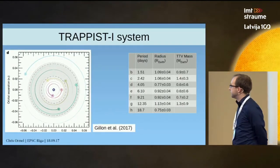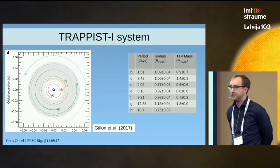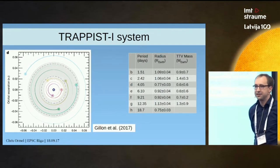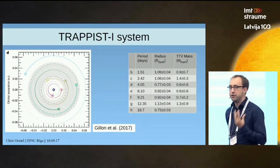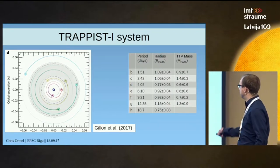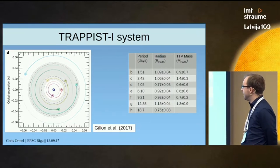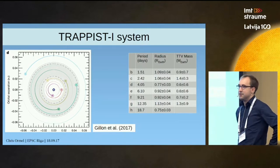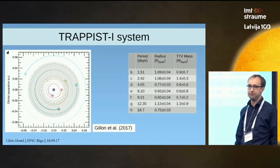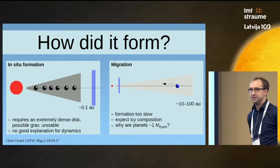The TRAPPIST-1 system is remarkable because it is a low mass star — a late type M star — only 8% of the mass of the sun, yet it harbors a full blown planetary system of at least seven planets. These planets are all the size and mass of Earth, so terrestrial planets probably. Also remarkable is that they reside within 0.06 astronomical units, so it's a very compact system. The key question is: how did it form?